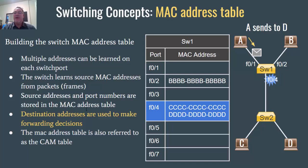Let's take a look at this. Computer A wants to send to computer D, so it's going to send this frame onto the network. The frame gets to Switch1, and Switch1 looks inside the frame and sees that the destination MAC address is all Ds — that's computer D's MAC address. It sees an entry in its table showing that host D with MAC address all Ds is on port 4.